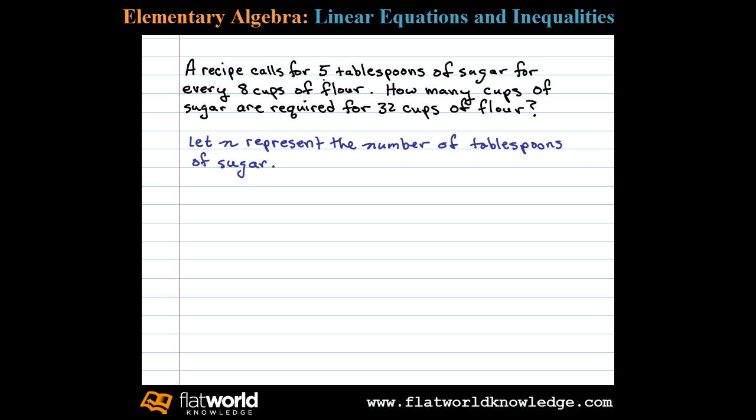In this case, we're going to try to set up a proportion where 5 tablespoons of sugar is to 8 cups of flour. Here we've set up a rate with sugar on top and the amount of flour in the denominator. To create a proportion, we'll set this rate equal to another rate where the amount of sugar is unknown. We need to figure out how much sugar is needed for 32 cups of flour, so this is our setup.